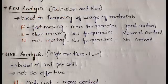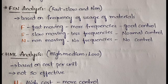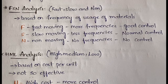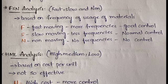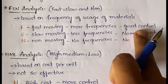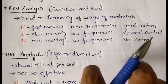The next technique is FSN analysis, where FSN stands for Fast, Slow, and Non-moving — referring to the frequency of usage of materials. Previously in ABC analysis, we gave priority to importance regardless of frequency. Here we give priority to the frequency of usage. Fast-moving materials are most frequently used and require strict control.